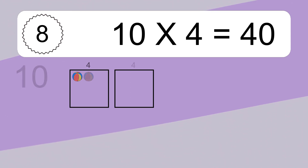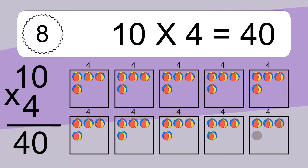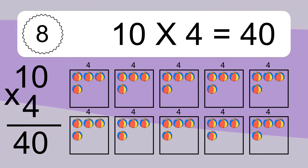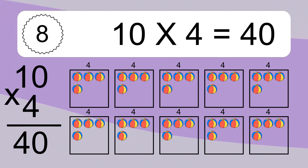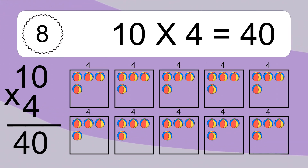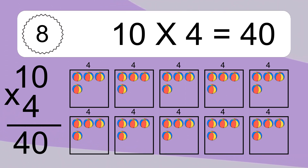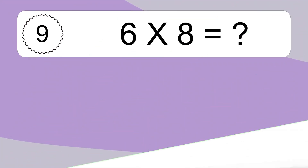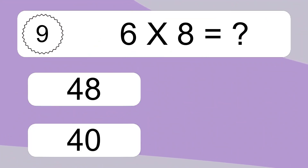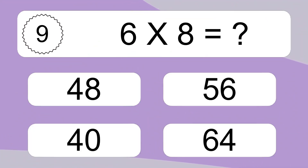10 times 4 equals what? 10 times 4 equals 40. We have 10 boxes, and each box has 4 colorful balls inside. If you count all the balls in all the boxes together, you will have 10 times 4 balls. This equals 40 balls.